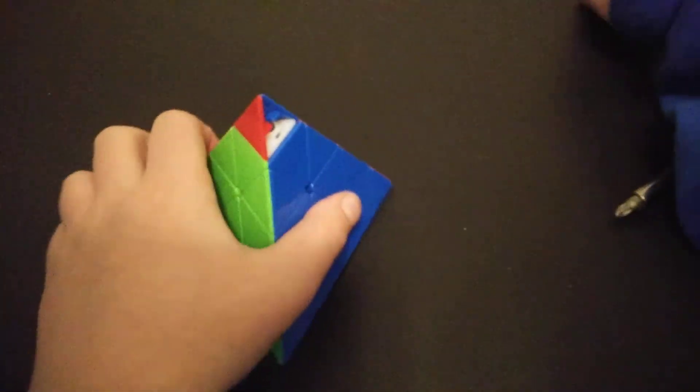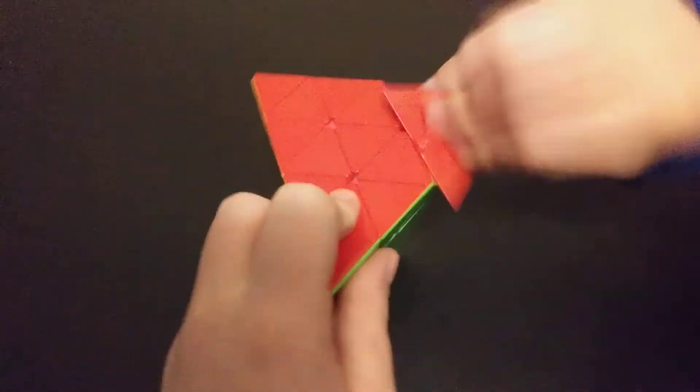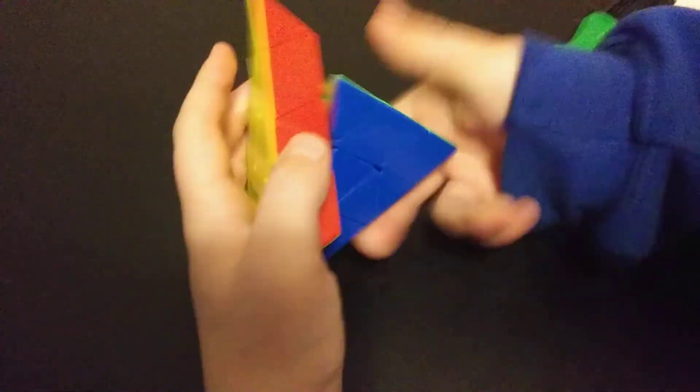And then lastly, you've got this piece, ridge in the hole. There you go. Your Master Pyraminx is totally assembled.